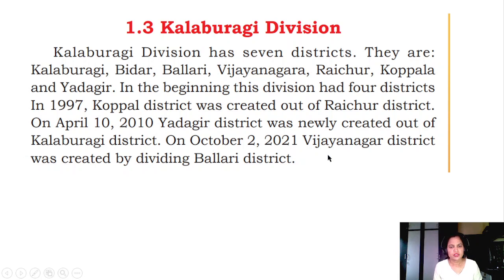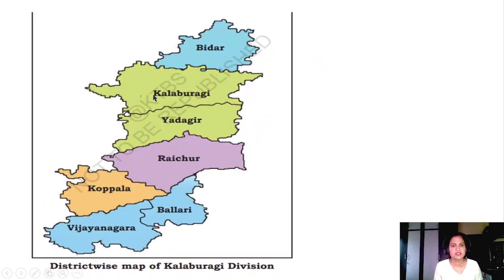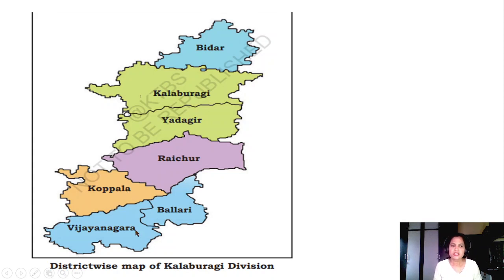As shown on the map, on October 2, 2021, Vijayanagar district was created by dividing the Ballari district. So before there were only 4 districts, and now - counting 1, 2, 3, 4, 5, 6, 7 - there are 7 districts in Kalburgi Division.